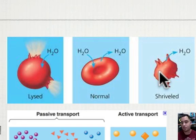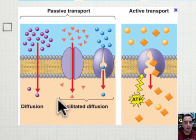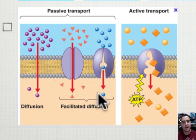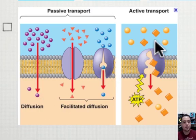Molecules need to go in, and when they do so without energy, that's called diffusion. There are a lot of molecules outside — high concentration — and a little inside, so they freely move from high to low. That's spontaneous, without energy — that's passive transport.